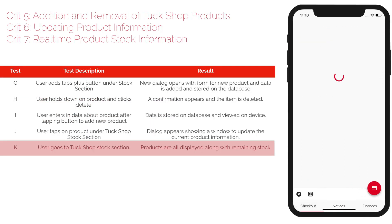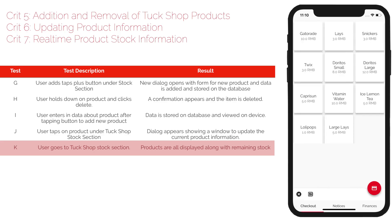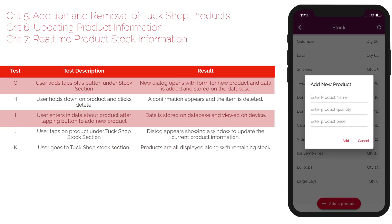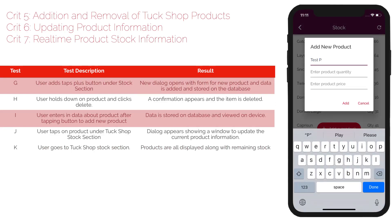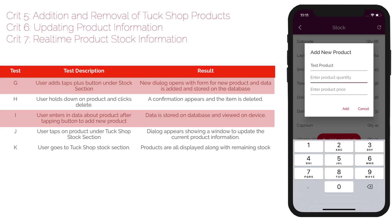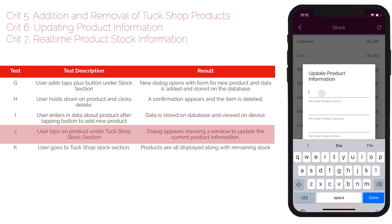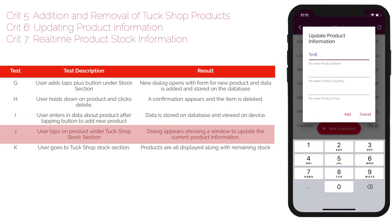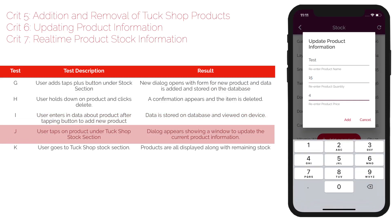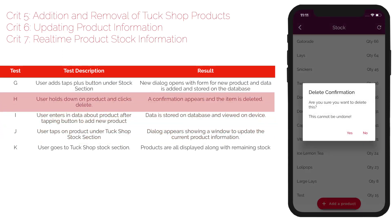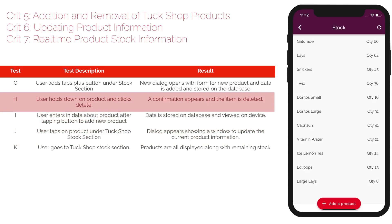Criteria 5, 6, and 7 show the functionality of the product list. Products can be shown in the list and also added. Once a product is added together with its quantity and price, it is immediately added to the stock list. The product information can be updated with changes to product name, quantity, and price — all immediately reflected in the database. The product can also be deleted and removed from the database.